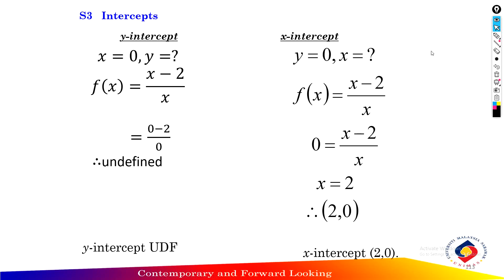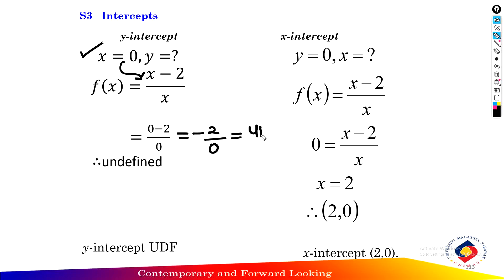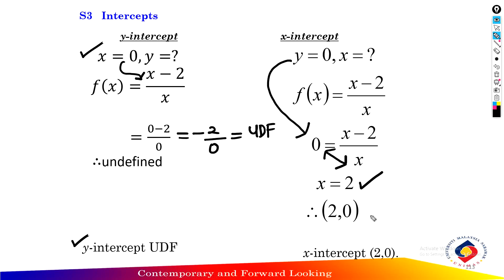Step three: find the intercepts. First, find the y-intercept by setting x equal to 0: substituting gives negative 2 over 0, which is undefined. So the y-intercept does not exist. Second, find the x-intercept by setting y equal to 0: 0 equals x minus 2 over x. Cross-multiplying gives x minus 2 equals 0, so x equals 2. The x-intercept exists at the point (2, 0).